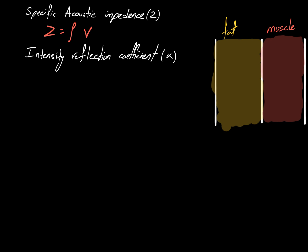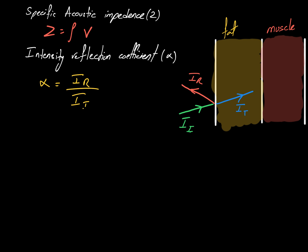The second terminology is called the intensity reflection coefficient, or alpha. To understand alpha, we need to understand that whenever an ultrasound wave hits a boundary — the point where two mediums come into contact, for example fat and air — only a fraction of the incident wave is transmitted (I_t) and the remaining energy is reflected back (I_r). Alpha is the ratio of the reflected intensity to the incident intensity.